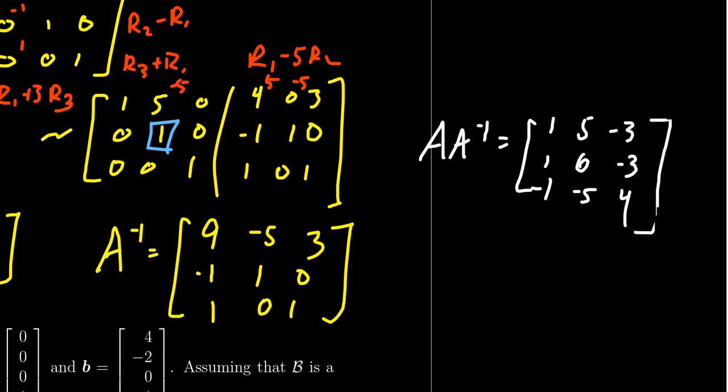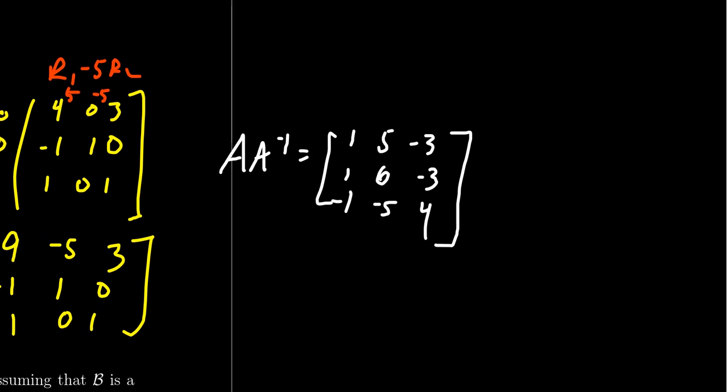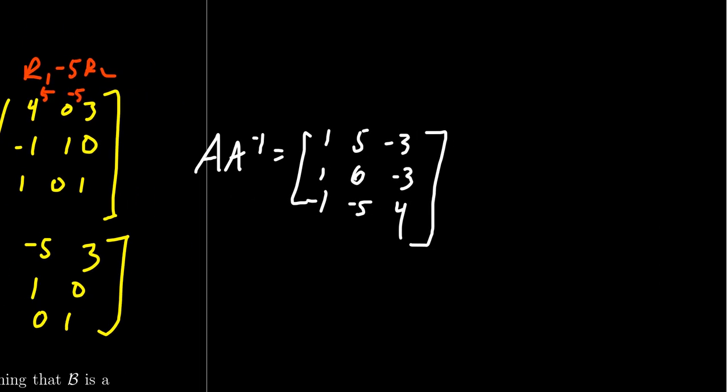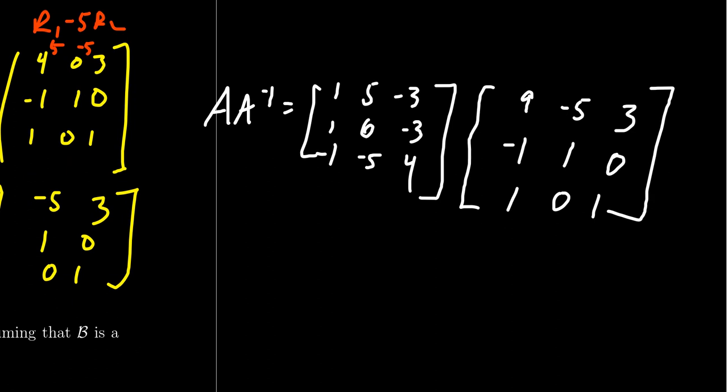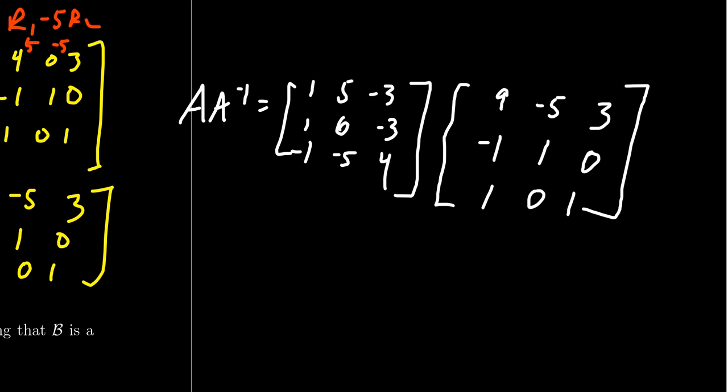And we multiply that by A inverse, which was on the screen a moment ago. But just recording what we have. We have 9, -5, 3, -1, 1, 0, and 1, 0, 1. Multiply these things out. And when you go through all the possible combinations, you're going to see that we actually get the identity. And it's good to check these things.